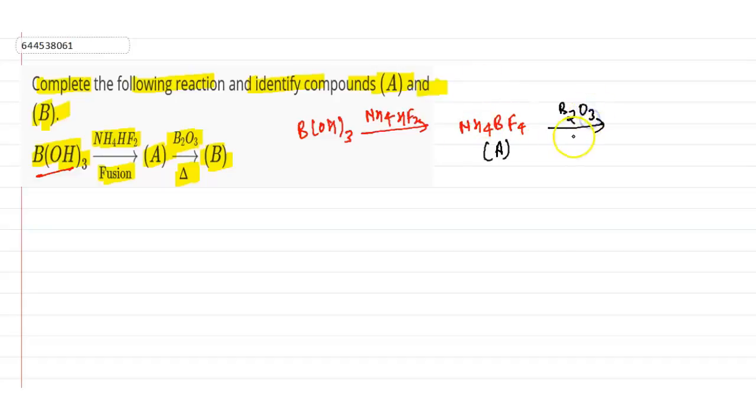heat this compound in the presence of B2O3. We get BF3, boron trifluoride. So this is our B product. Product A is NH4BF4, and product B is BF3. This is our answer.